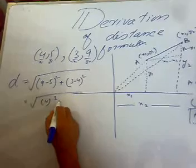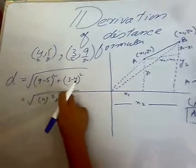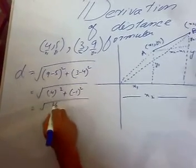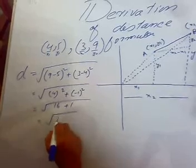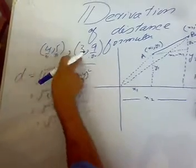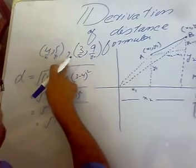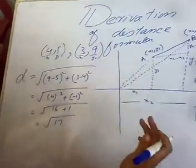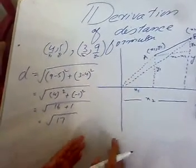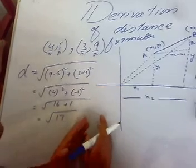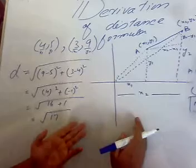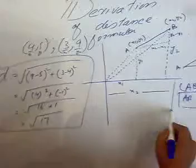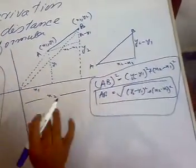That gives us 4 squared plus (minus 1) squared. Since minus 1 squared is positive, we get 16 plus 1, which equals the square root of 17. This is the distance between the two points. This formula can be used in many ways — whenever we need to calculate the distance between two points, prove something is a triangle, or calculate the lengths of sides of a triangle or parallelogram.